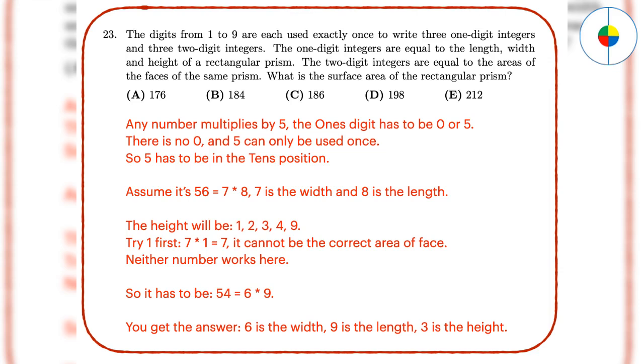Question 23: This is a tough guessing game. If you know the divisibility rules, 5 cannot be the one-digit integer, otherwise it will show up in the two-digit integers. 5 can only be in the tens digit of a two-digit integer. Otherwise it has to be in the one-digit integer. There are only two possibilities for the two-digit integer: 54 equals 6 times 9, or 56 equals 7 times 8. After some tries, only 54 equals 6 times 9 makes sense. So the dimensions of the prism are 3, 6, and 9. The areas of the faces are 18, 27, and 54. The surface area will be 198.